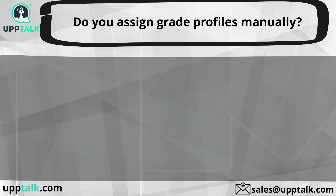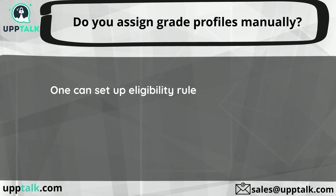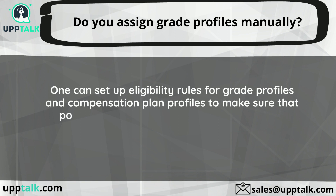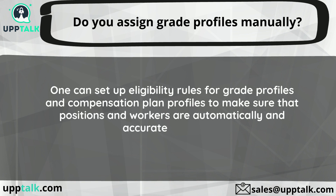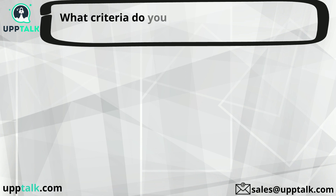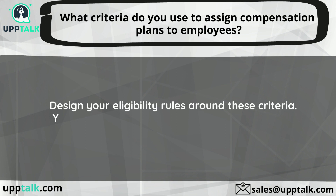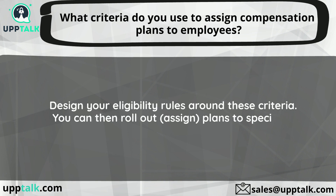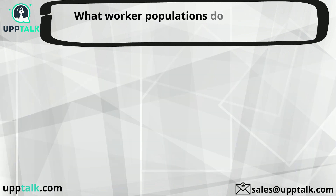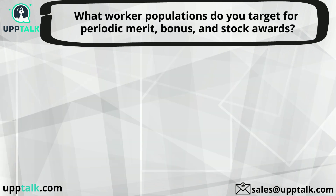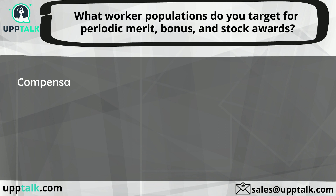Do you assign grade profiles manually? You can set up eligibility rules for grade profiles and compensation plan profiles to ensure that positions and workers are automatically and accurately updated. What criteria do you use to assign compensation plans to employees? Design your eligibility rules around these criteria. You can then roll out and assign plans to specified populations.